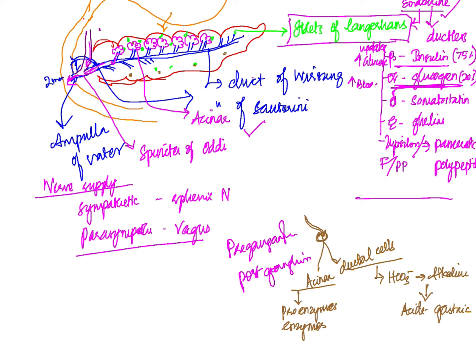Whenever there is a case of hypoglycemia, glucagon helps in the degradation of glucose, stops the uptake of glucose, and increases blood glucose level. Somatostatin inhibits growth hormone, thyroid stimulating hormone, and other hormones. Ghrelin is the hunger hormone. Pancreatic polypeptide is produced by the F or PP cells.